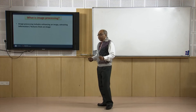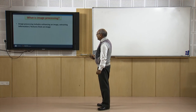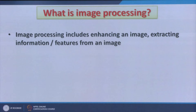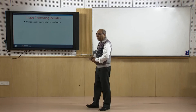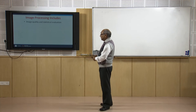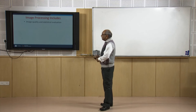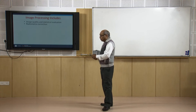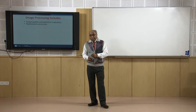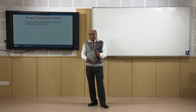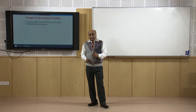Image processing includes enhancing an image and extracting information and features from it. Computerized routines for information extraction — that is, classification and pattern recognition — are applied to satellite images to obtain categories of information about specific features. Image processing also includes image quality and statistical evaluation. Before further processing or enhancement, we must know the minimum pixel value, maximum pixel value, standard deviation, and how pixels are distributed — this prior information helps decide which enhancement technique is better for that particular image.